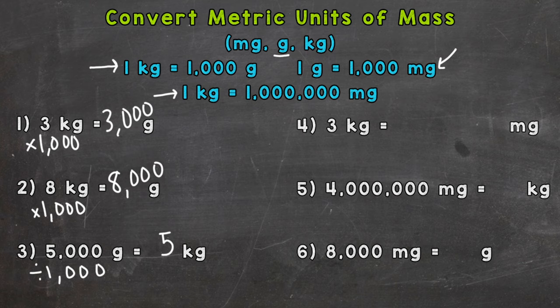Number four, we're going from kilograms to milligrams. So three kilograms — each one of those kilograms is a million milligrams. So we do three times a million, and that's going to give us an answer of 3,000,000 milligrams.